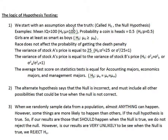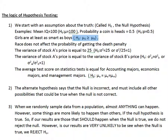Let's go through the examples quickly. If the null is that the mean equals 100, the alternate is that the mean is not 100 — it's something different. If the null is that the probability of heads is 0.5, the alternate is that the probability is not 0.5. For girls being at least as smart as boys — the null is that girls are greater than or equal to boys in intelligence — the alternate is that girls are less smart than boys.